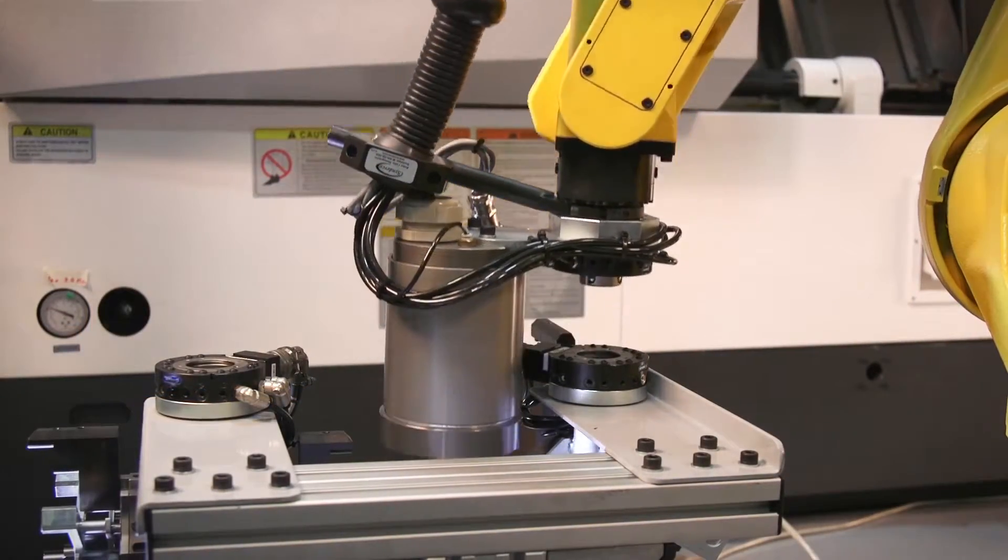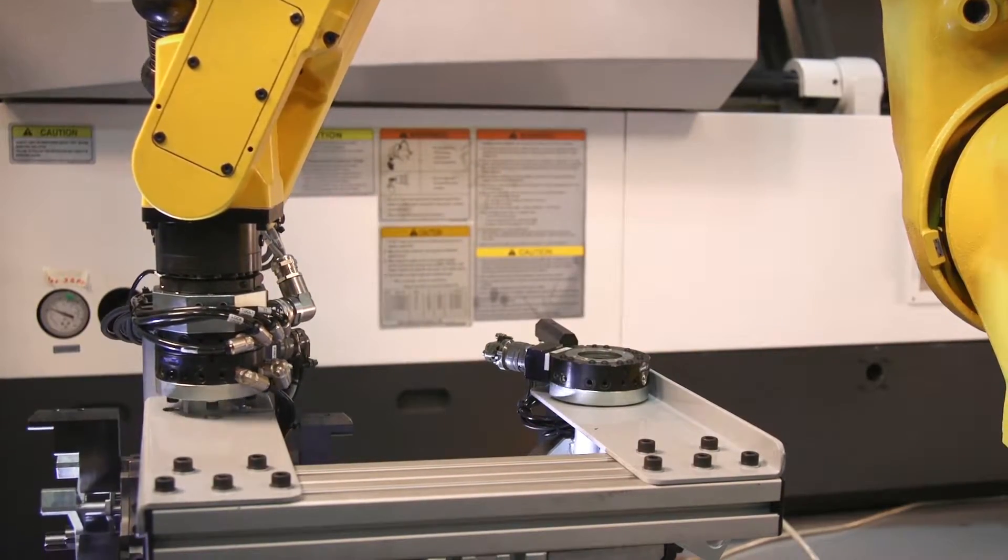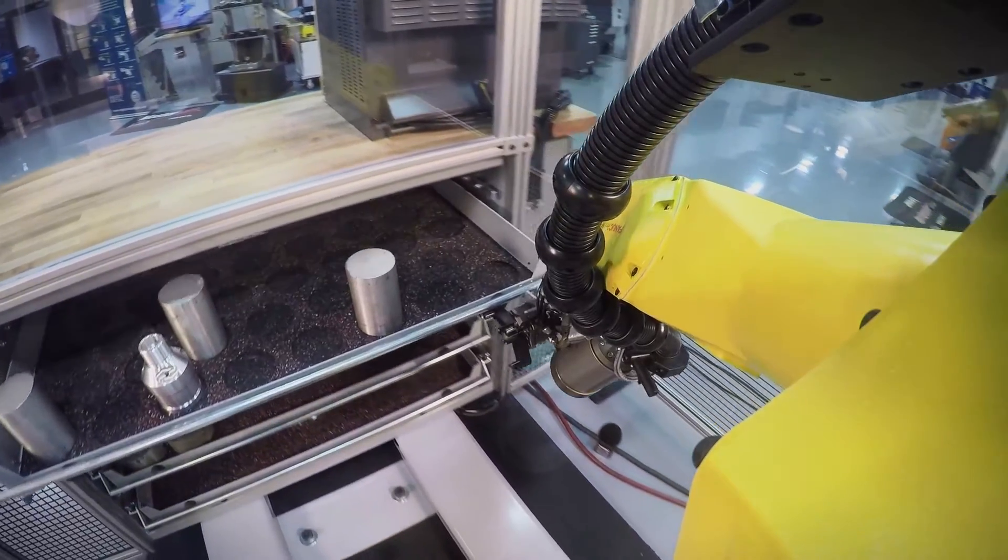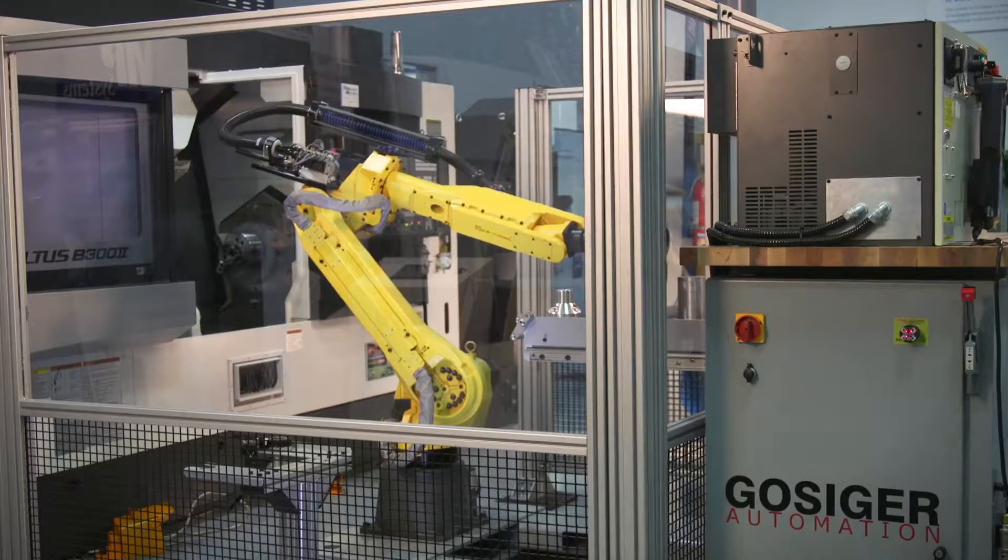The robot then changes its Kitagawa ProMono Gripper to the first part geometry to be loaded and machined. As the robot loads the first part to be machined, the Kitagawa automated jaw pallet grips it securely and accurately.